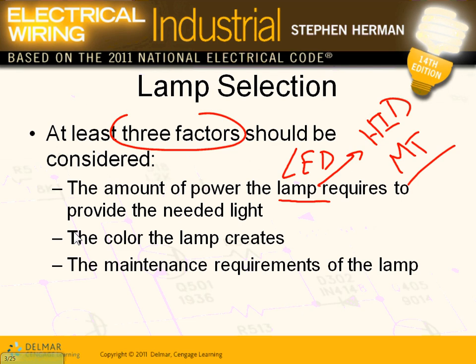The color the lamp creates is a big deal, because if you're putting parking lot lights you might not be able to see properly. You need to have enough color discrimination in the fixture that you put so people can find their objects outside, especially in a parking lot.